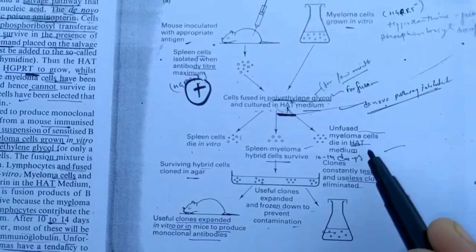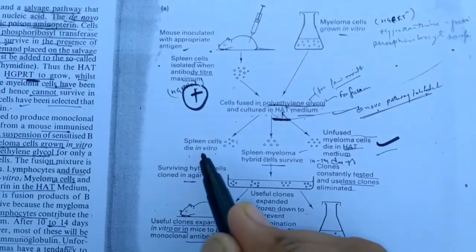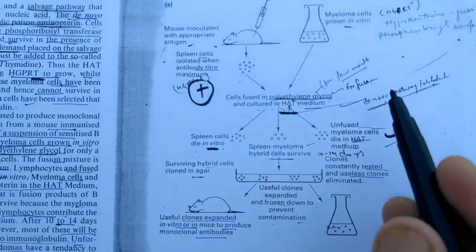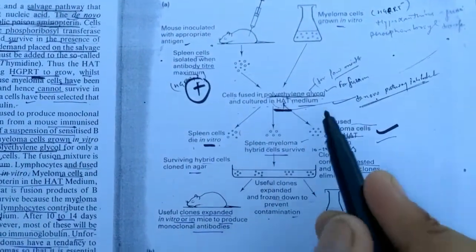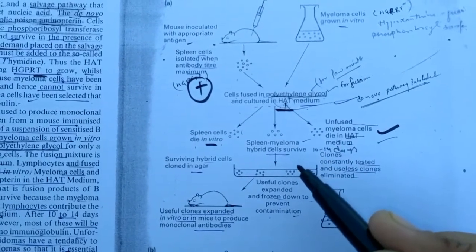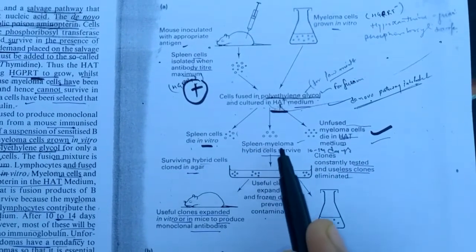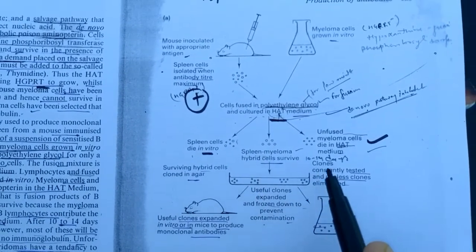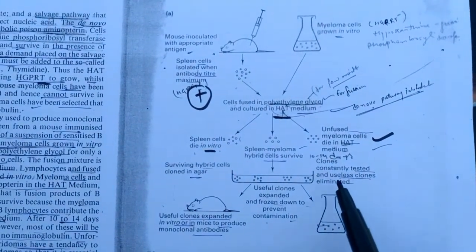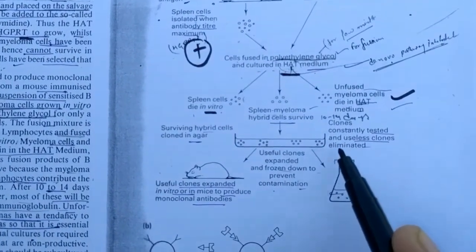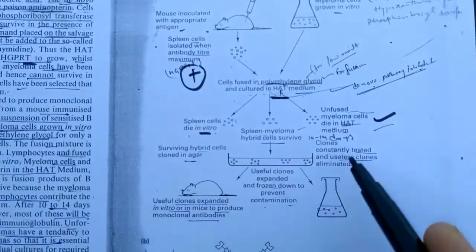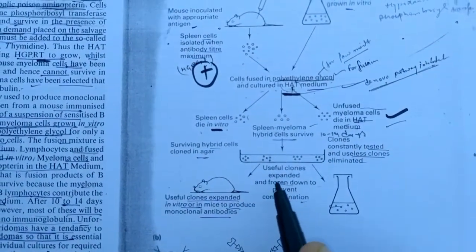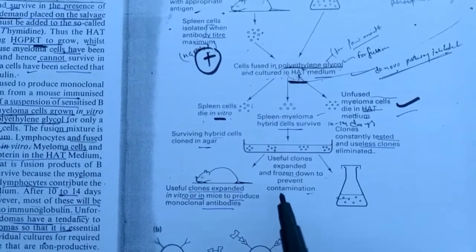The unfused cells will die here. Spleen cells die in vitro because they cannot survive in a hybrid type of condition. Spleen myeloma hybrid cells survive. Ten to fourteen day clones are constantly tested and useless clones are eliminated. Here the testing and quality control is done.